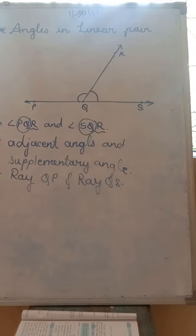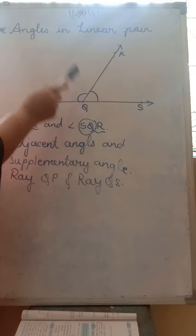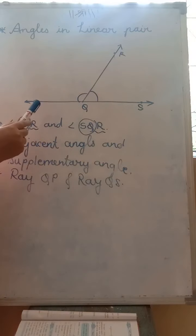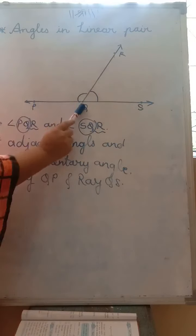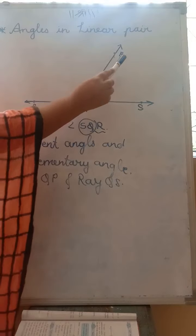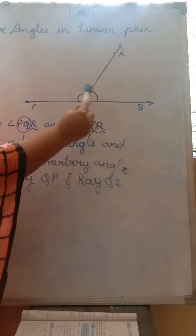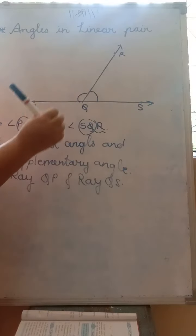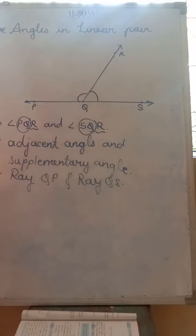This activity is in your textbook on page number 29. What you will do is keep your protractor and measure angle PQR and angle RQS. Write the measurement of both of them in the box. What will be their addition? It will surely be 180.